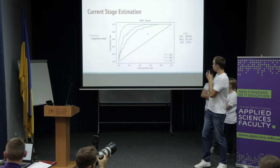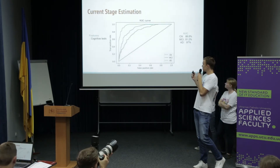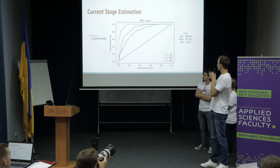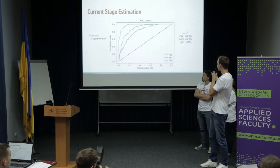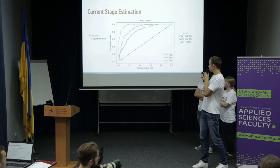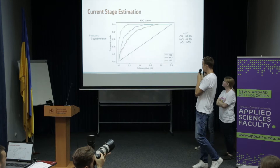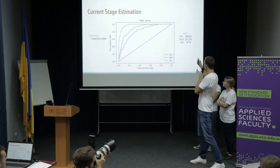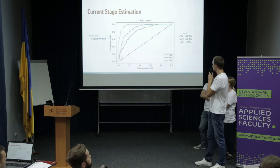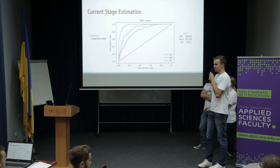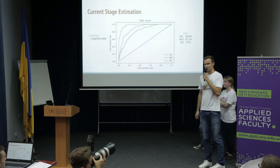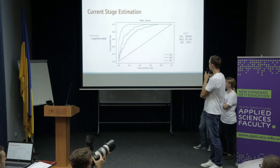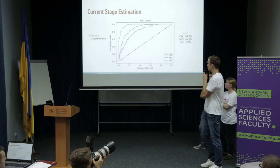Our results for the current stage classification show it works pretty well — we get AUCs of around 90% on average. The MCI class is the worst performer, likely because it is not really well-defined; it sits somewhere in between healthy and Alzheimer's disease.